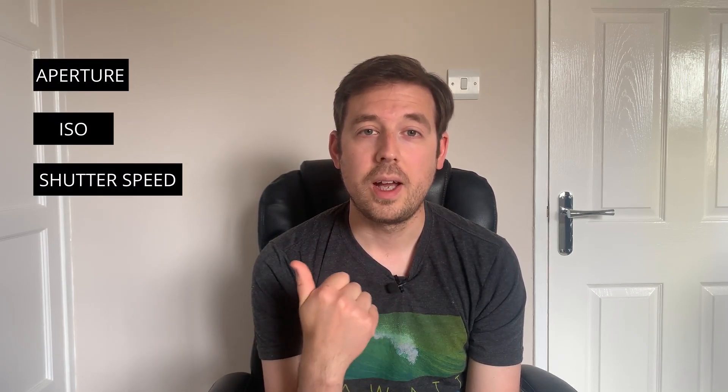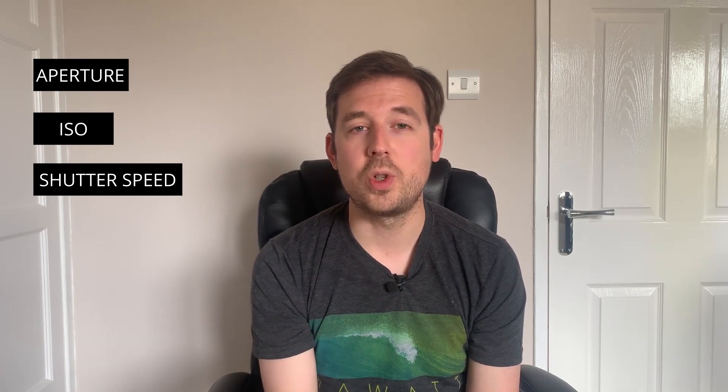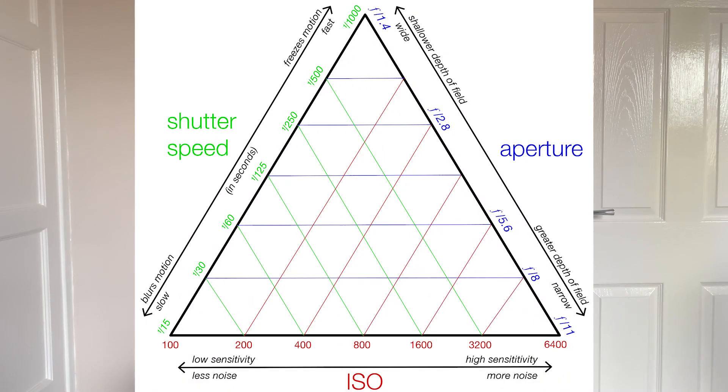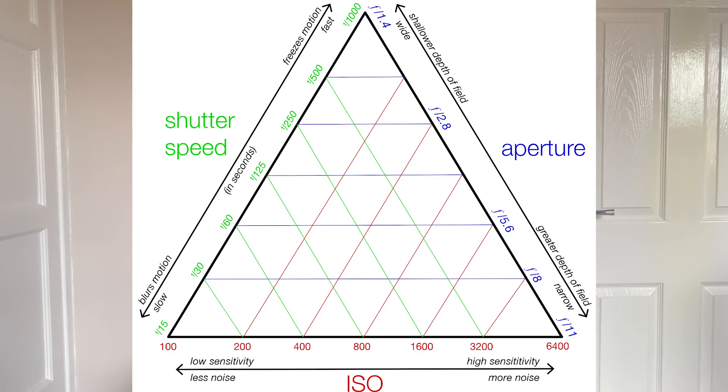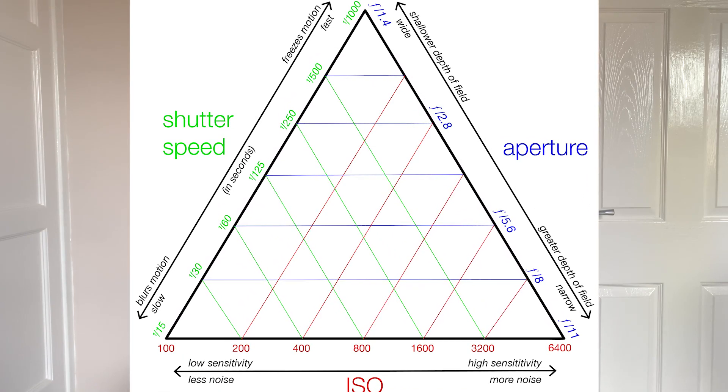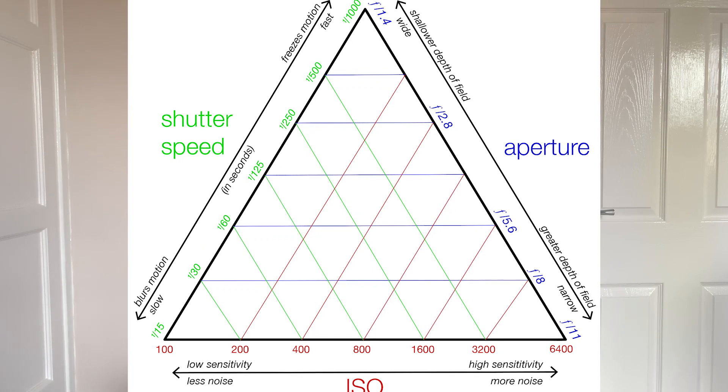There are three main settings we need to consider when setting up our camera for astrophotography: aperture, ISO, and shutter speed — or exposure length as you might also hear it called. These three settings make up what's known as the exposure triangle. If you make a change to one of these settings, you're going to affect another — for example, changing from ISO 100 to ISO 200 means you'll need to adjust your shutter speed to account for the brighter image.